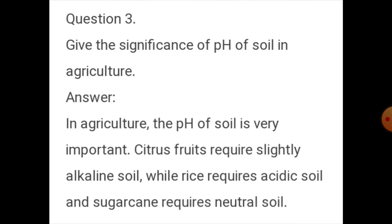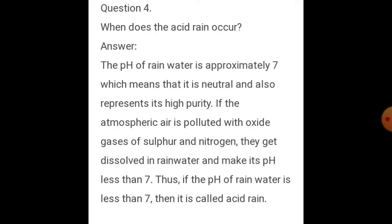Question three: Give the significance of pH of the soil in agriculture. In agriculture, the pH of the soil is very important. Citrus fruits require slightly alkaline soil, rice requires acidic soil, and sugar cane requires a neutral soil.